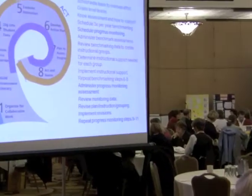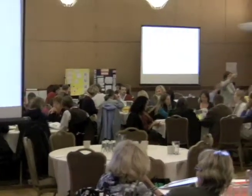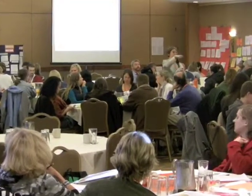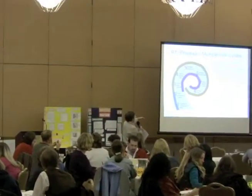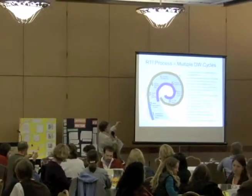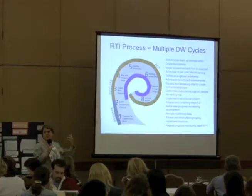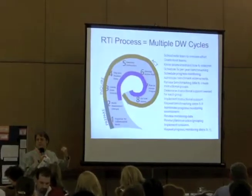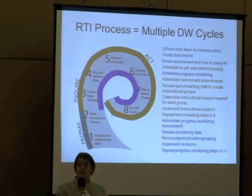DataWise is a circle — that's why the little point comes back in on it, and you go in a cycle. What RTI does is make that cycle very visible. DataWise says, I'm going to plan to assess progress. With RTI, we pretty much make those decisions up front, and we try to get you to do that with DataWise too.